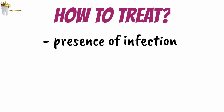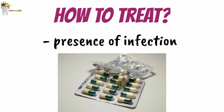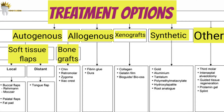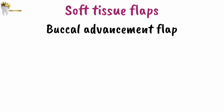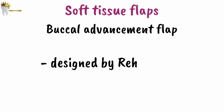If there is maxillary sinusitis present, it should be treated first with antibiotics before closing the defect. To close an oroantral communication, there are several treatment options. There is a flowchart given by Visscher that gives an overview of all the treatment options. Among all of these, soft tissue closure is the treatment of choice for most oroantral communications. The most common and oldest surgical technique is the buccal advancement flap, designed by Rehrmann.